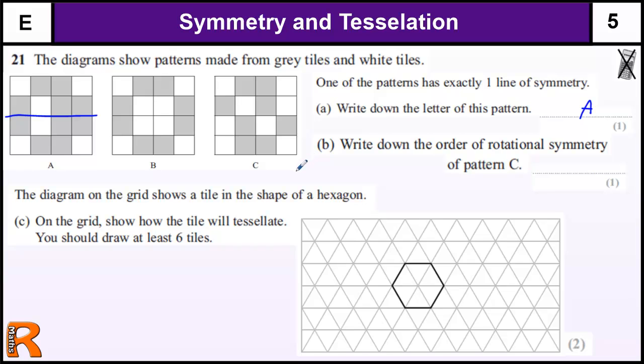Write down the order of rotational symmetry of pattern C. So when we spin this pattern around the middle, how many times does it fit on top of itself? Well, quite tricky to see this, but if we go 180 degrees, if we take this point and spin it around until it's down here, you should realize that it's in the same position, and then back again to the top. So it has two points at which it's on top of itself in 360 degrees, so that's order two rotational symmetry.